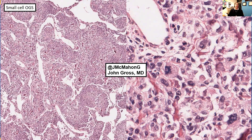Osteosarcoma is also seen here on the left with a filigree pattern of osteoid with primitive cells seen at low to intermediate power. On the right, you can see that these primitive cells are directly producing this mineralized matrix. While the cells are quite small, there is a little bit of cytologic atypia, although that's sometimes subjective. The key point is that these primitive cells are directly producing the mineralized matrix, which has a very wispy and lace-like calcification pattern.